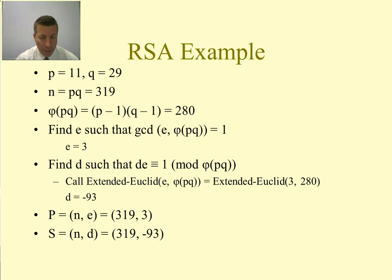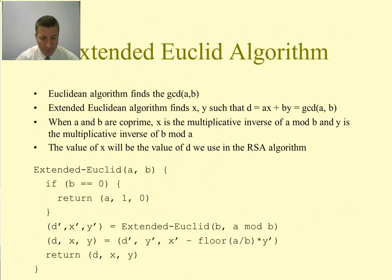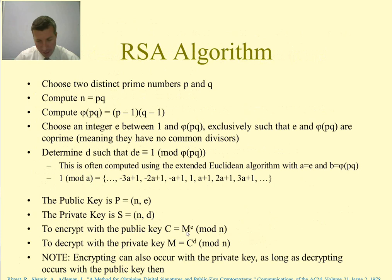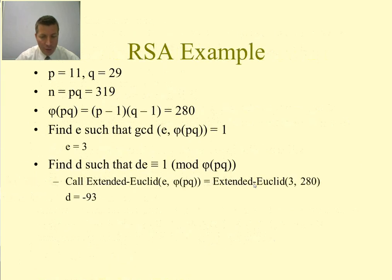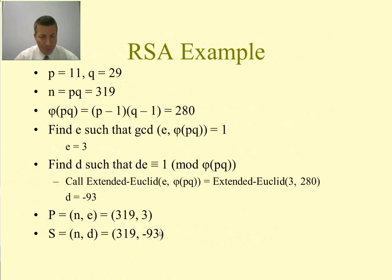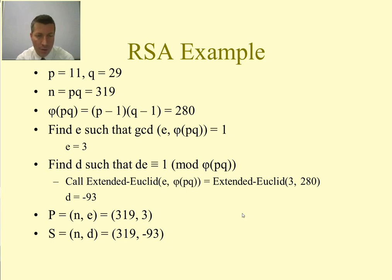With our public key (n, e) and private key (n, d), we use the RSA formulas: encrypt as c = m^e mod n (raise plaintext to the 3rd power mod 319), and decrypt as m = c^d mod n (raise ciphertext to the −93rd power mod 319). Even with small primes like 11 and 29, there is significant computation involved, and with larger prime numbers, it takes computers a very long time to encrypt, decrypt, or attempt to break this algorithm.